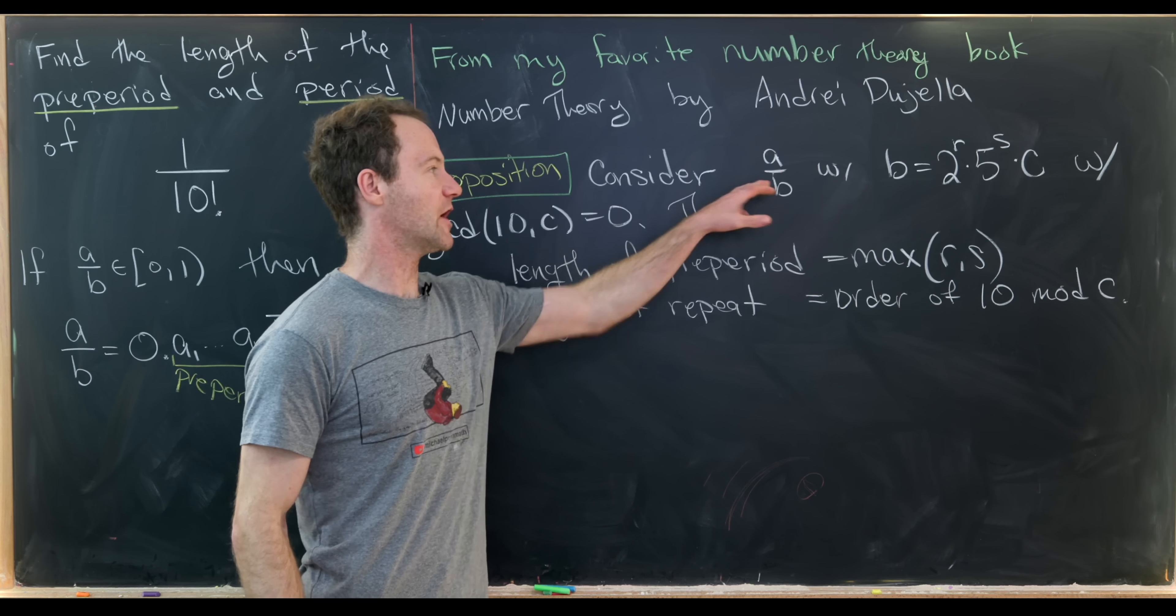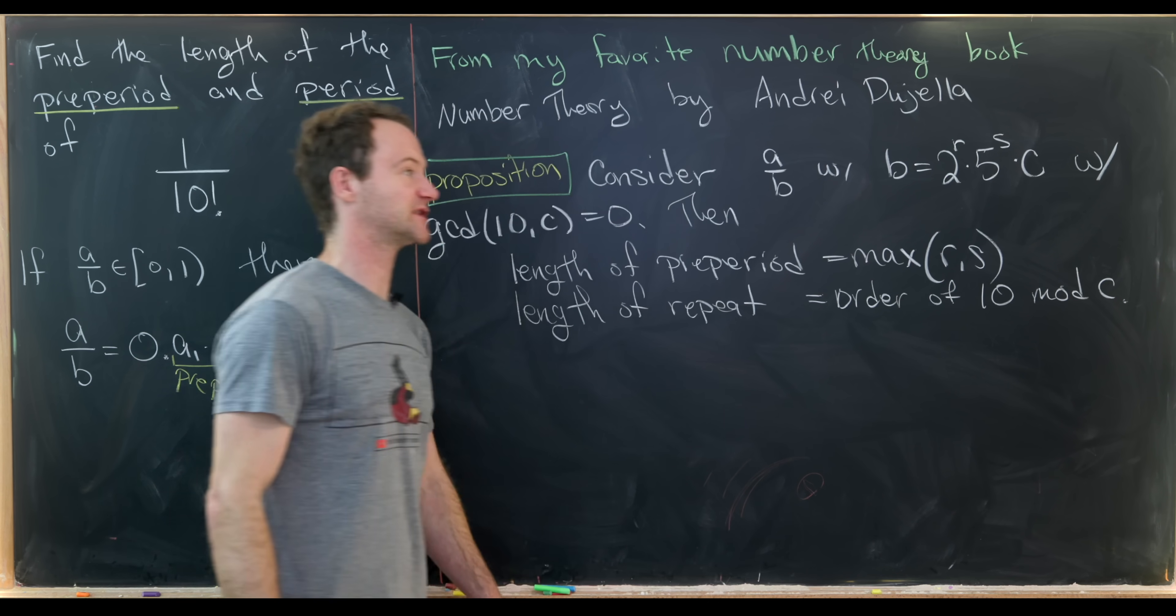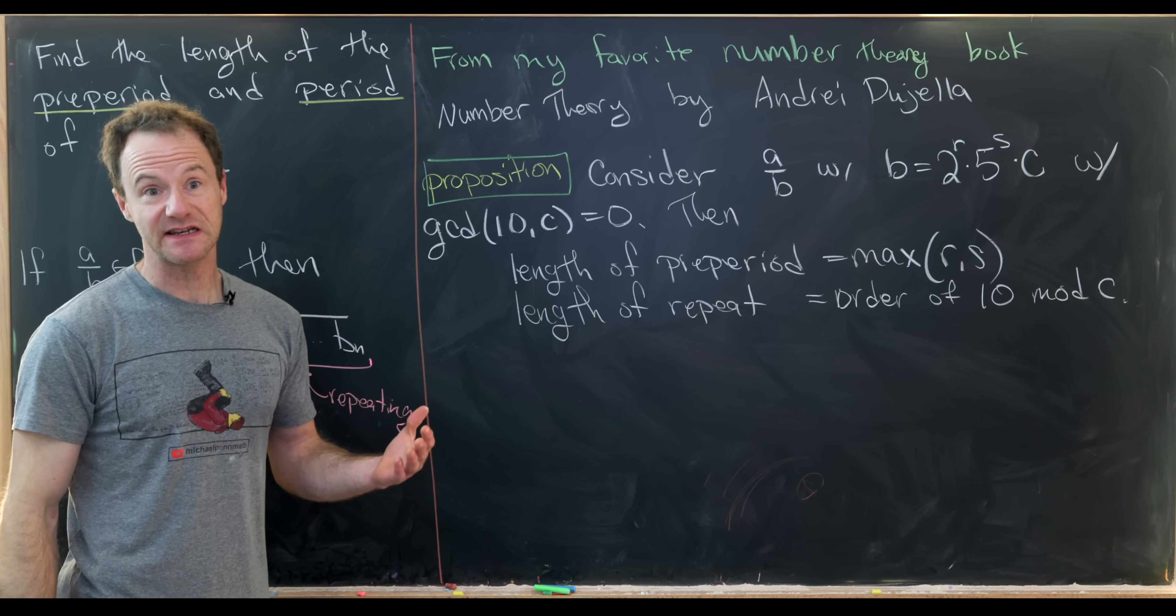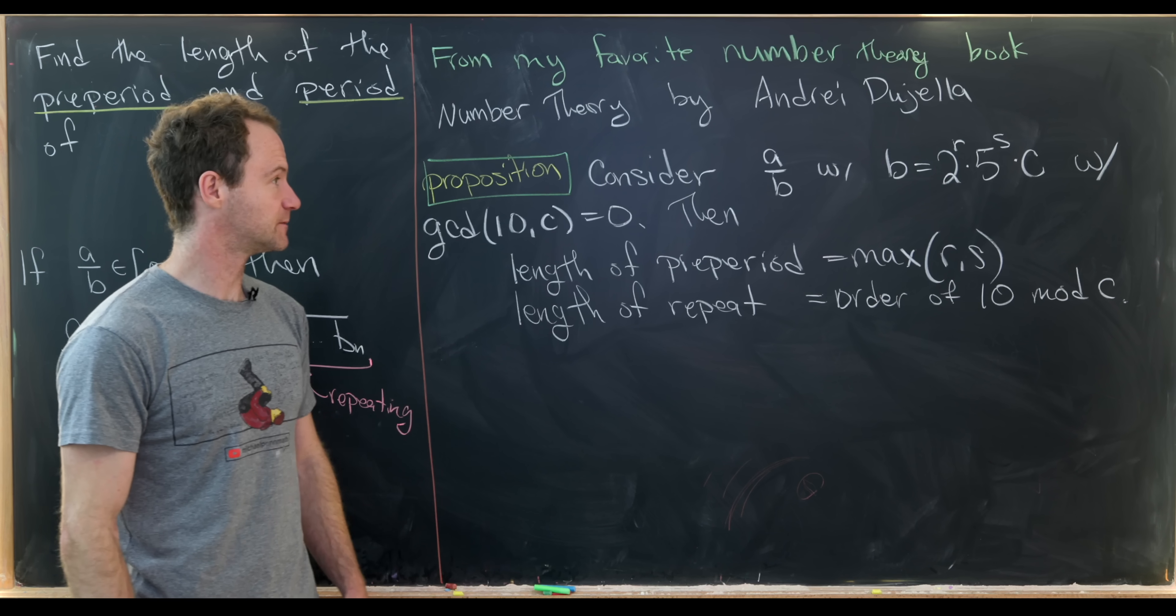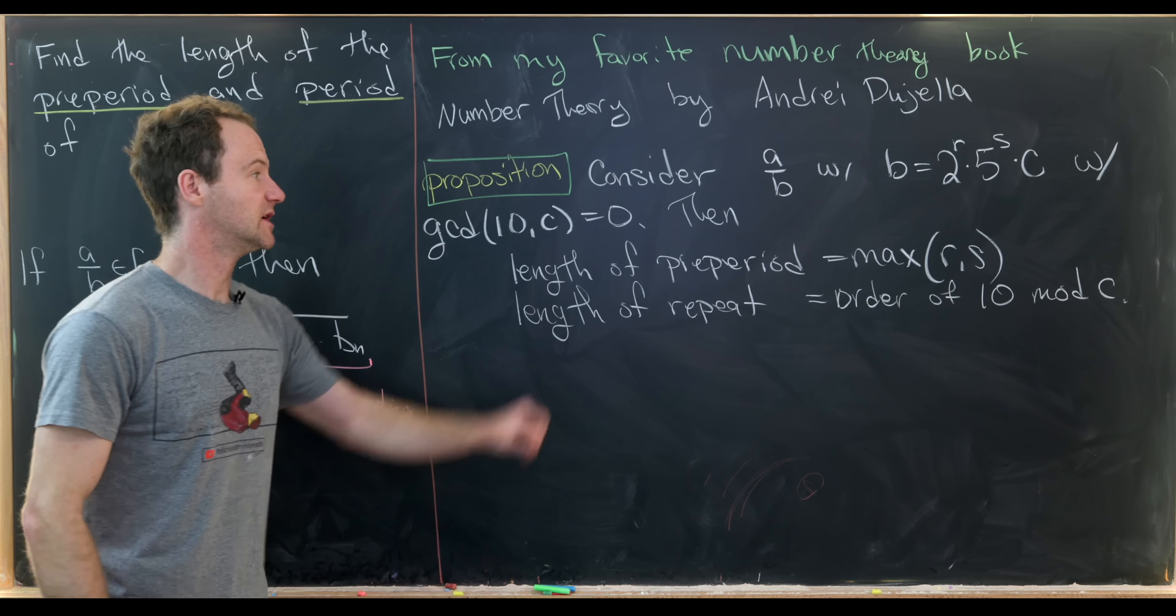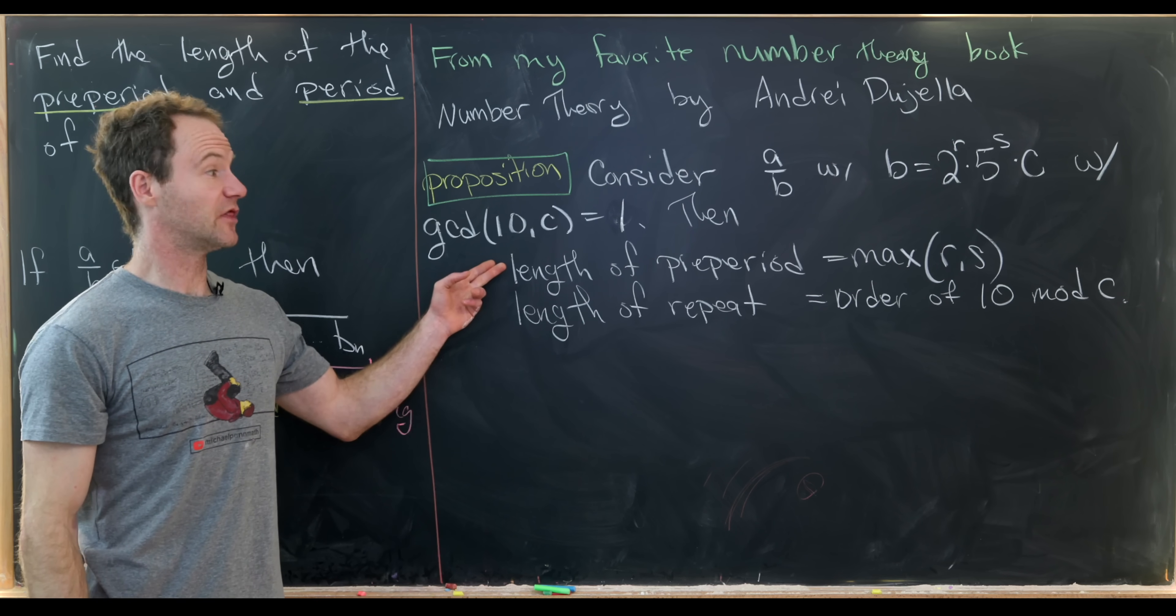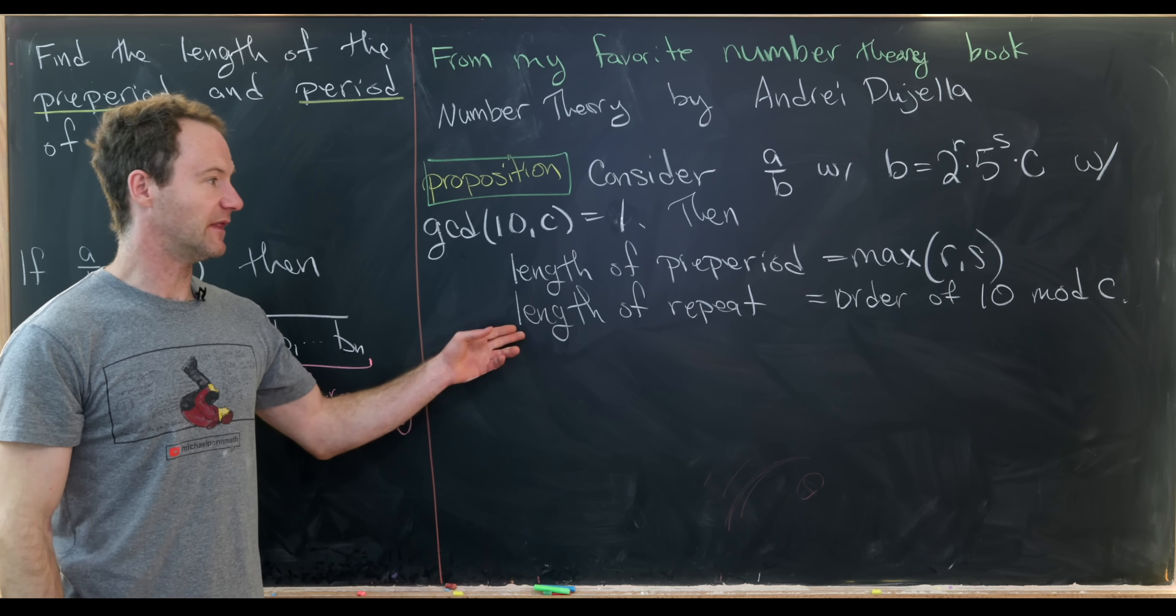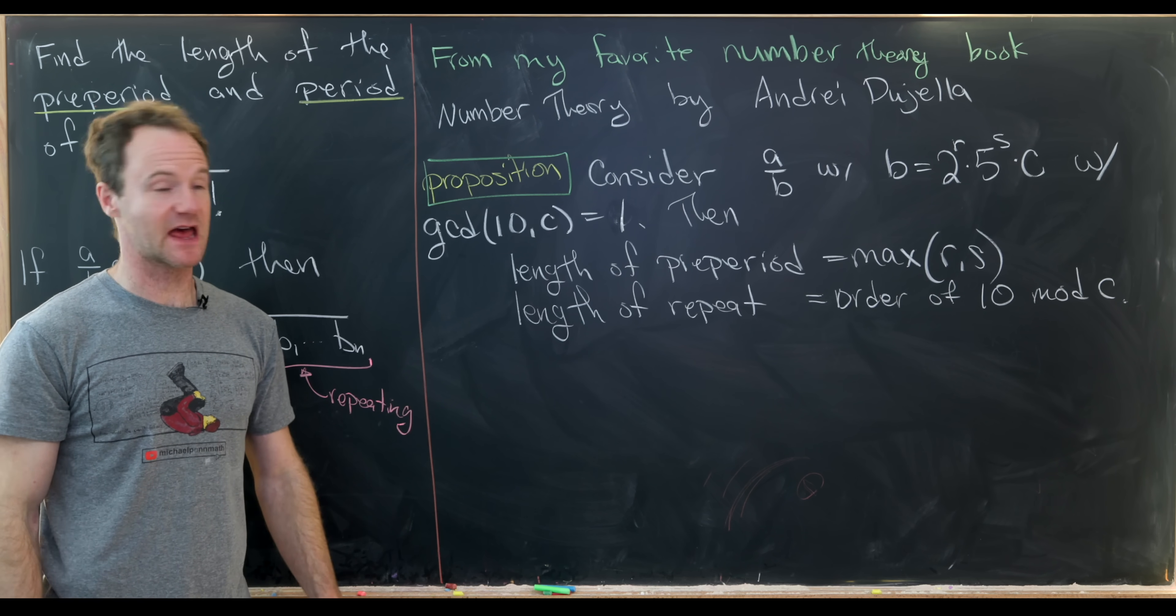So let's consider a over b, so that's a rational number, and then also we'll suppose that b factors as follows: 2 to the r times 5 to the s times c, where c does not contain 2 or 5 as its prime factors. So we can encode that here as the GCD of 10 with c is equal to 1. Then the result is that the length of the pre-period is the maximum of r and s, and the length of the repeat, or the length of the period, is the order of 10 mod c.